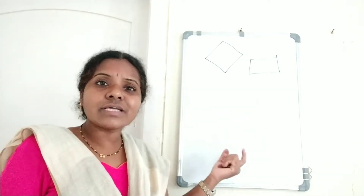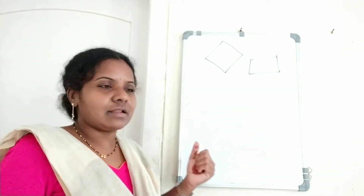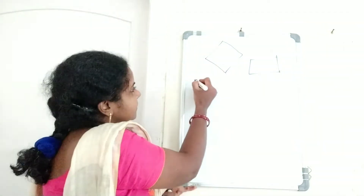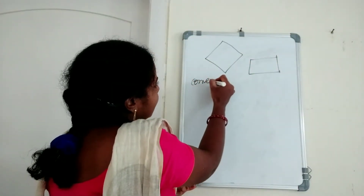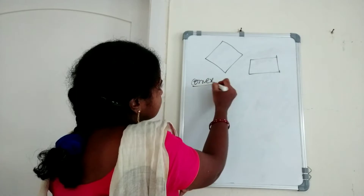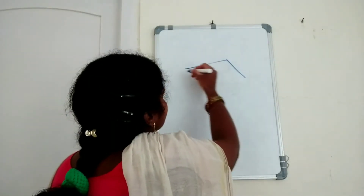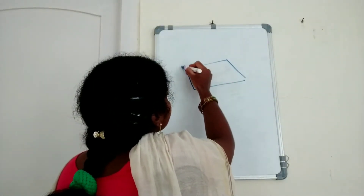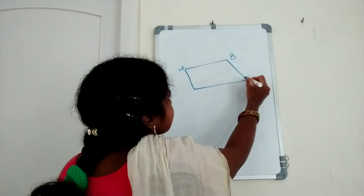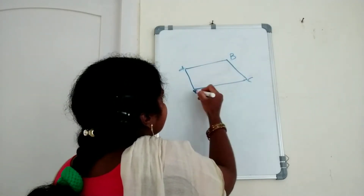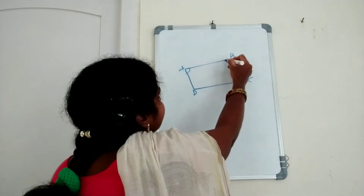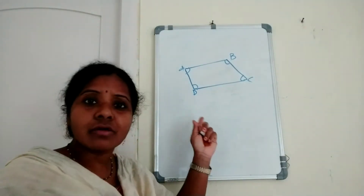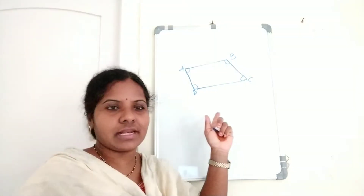Now, convex quadrilateral. What is a convex quadrilateral? In a quadrilateral, if each interior angle is less than 180 degrees, that quadrilateral is said to be a convex quadrilateral.